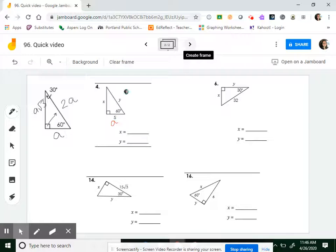Number 5: A, 2A, A root 3. Number 6: Across from 30 is my A, across from the right angle is 2A, across from 60 is A root 3. Number 14: Across from 30 is A, across from the right angle is 2A, across from 60 is A root 3. So just automatically label.